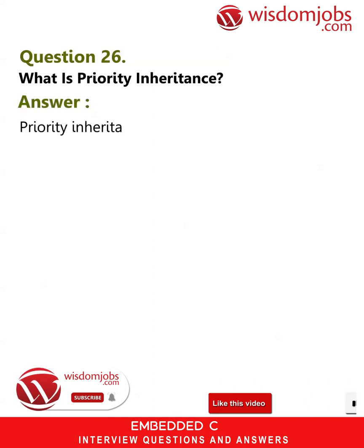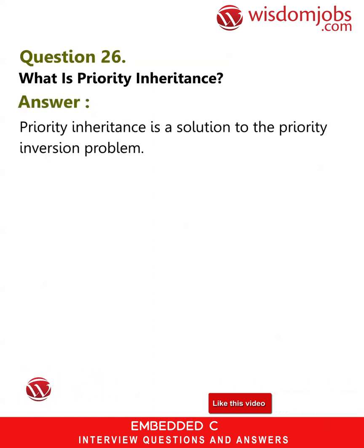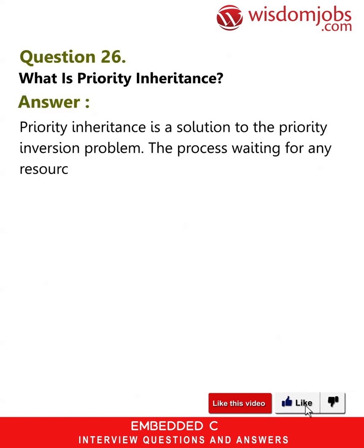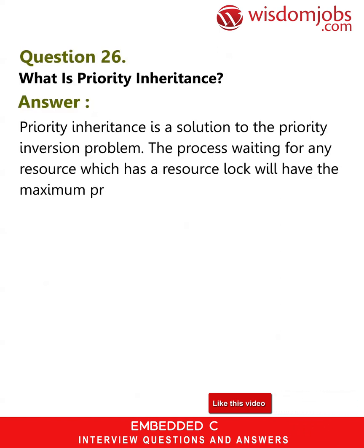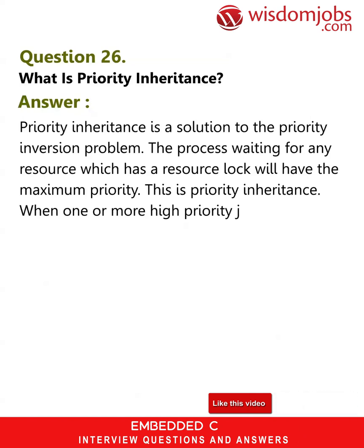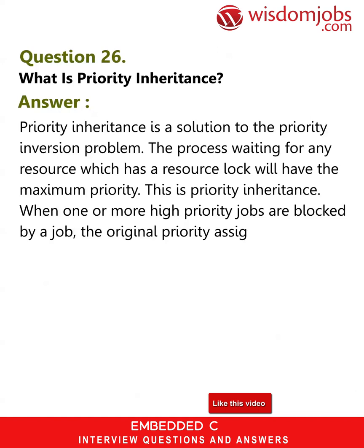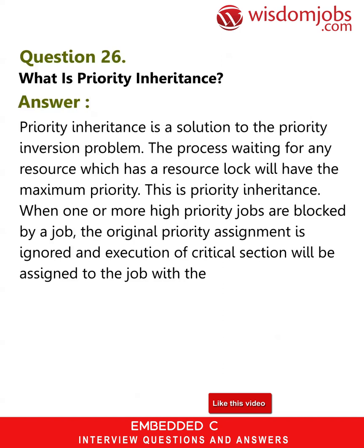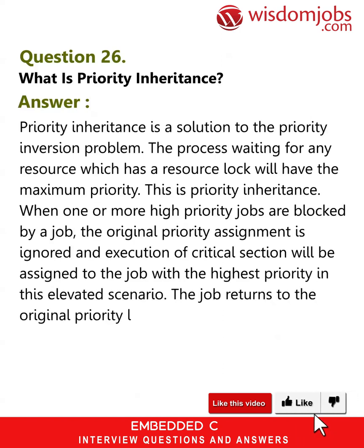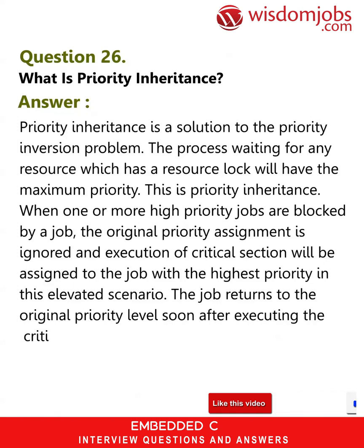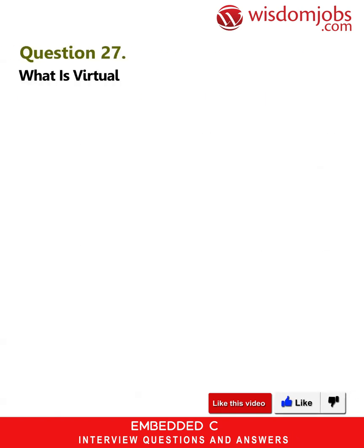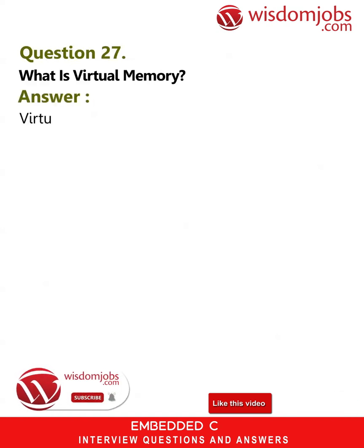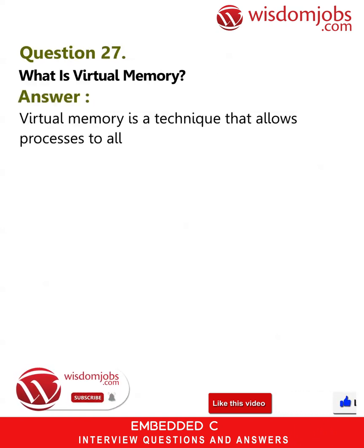Question 26: What is priority inheritance? Answer: Priority inheritance is a solution to the priority inversion problem. The process waiting for any resource which has a resource lock will be assigned the maximum priority — this is priority inheritance. When one or more high priority jobs are blocked by a job, the original priority assignment is ignored, and execution of the critical section is assigned to the job with the highest priority. The job returns to the original priority level after executing the critical section.